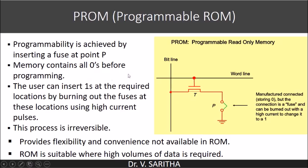PROM — the next type of ROM — that is programmable read-only memory. In this case, instead of having the connection done directly during manufacturing time, this connection is called a fuse. If we burn this fuse, we say that one is stored. If we don't burn this fuse, then zero will be there, because when it is not fused the cell is connected, meaning zero is stored. If we fuse it, then one is written in that particular cell. So programmability is achieved by inserting a fuse at point P.